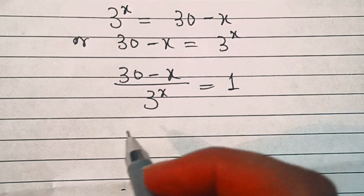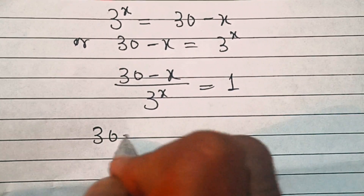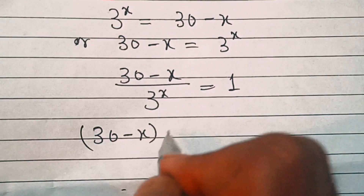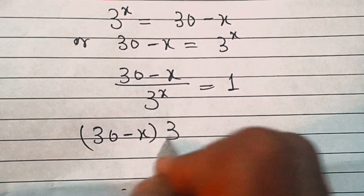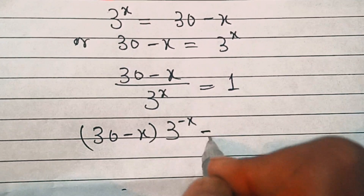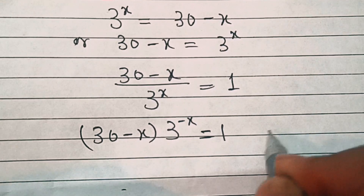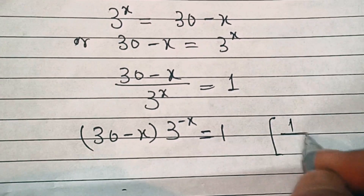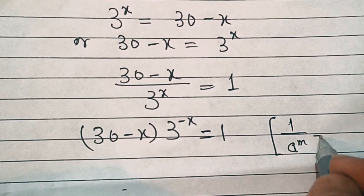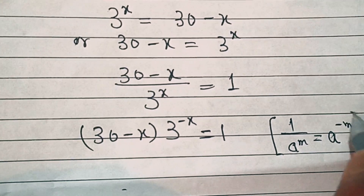So in the next step, 30 minus x divided by 3 power x will become 30 minus x into 3 power minus x equal to 1. Because we know 1 by a power m is equal to a power minus m.